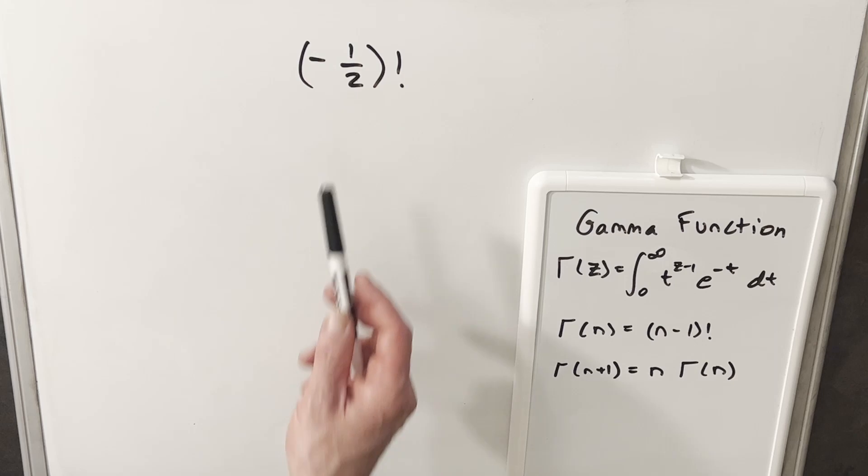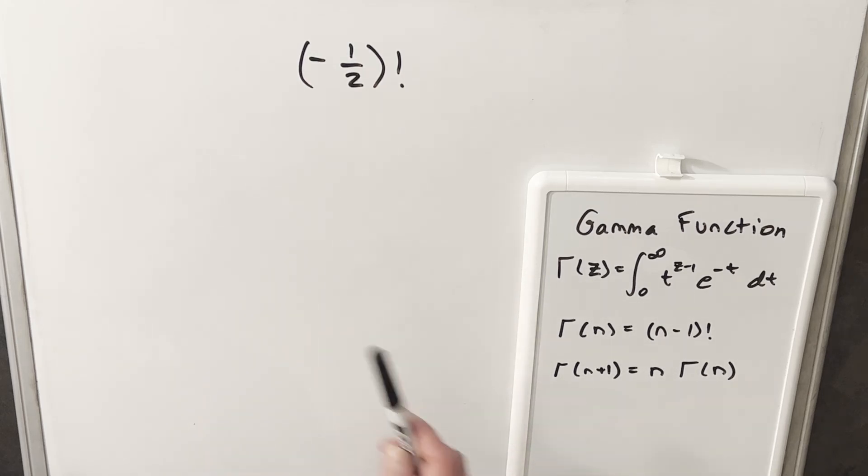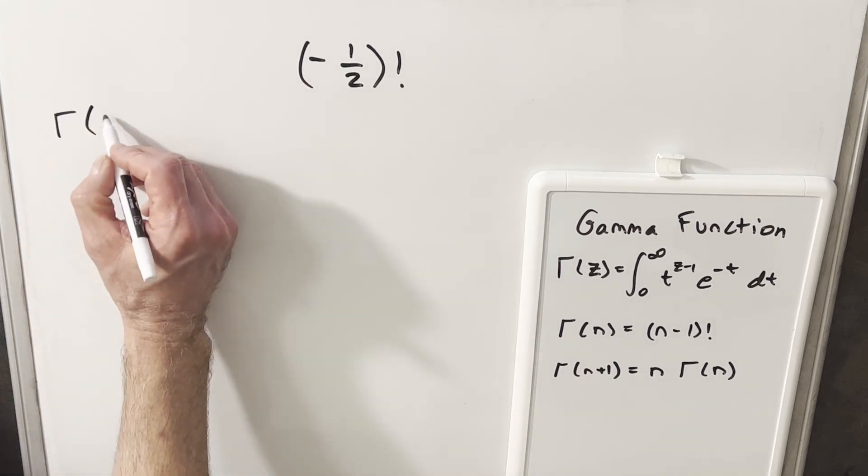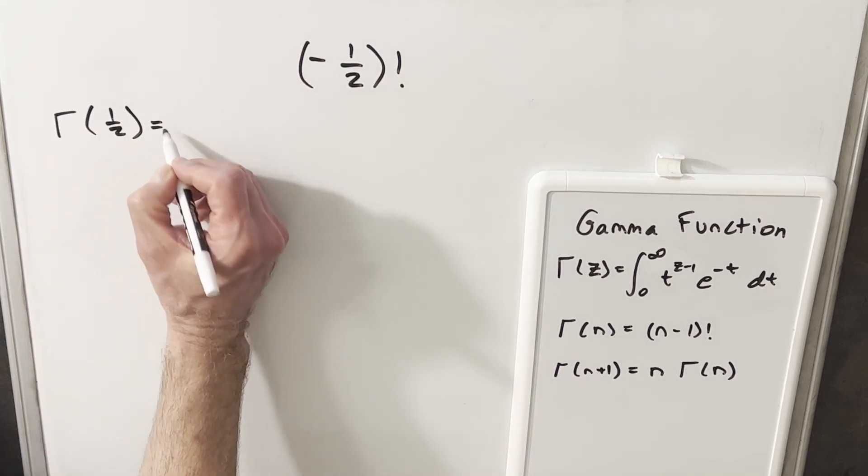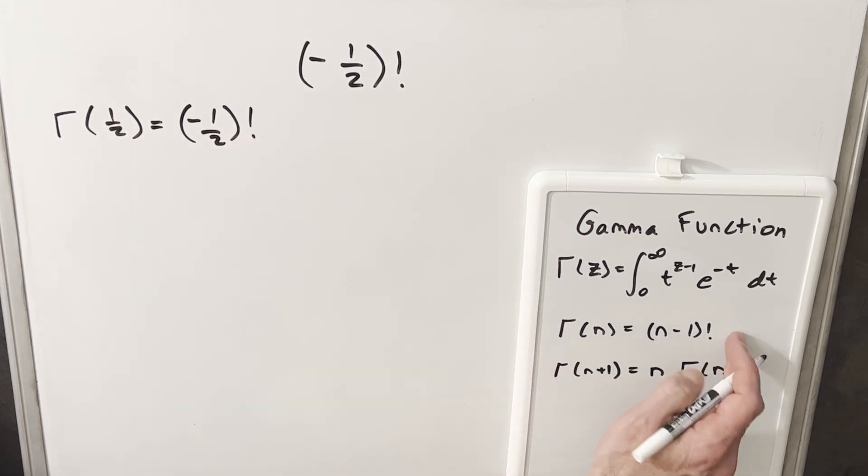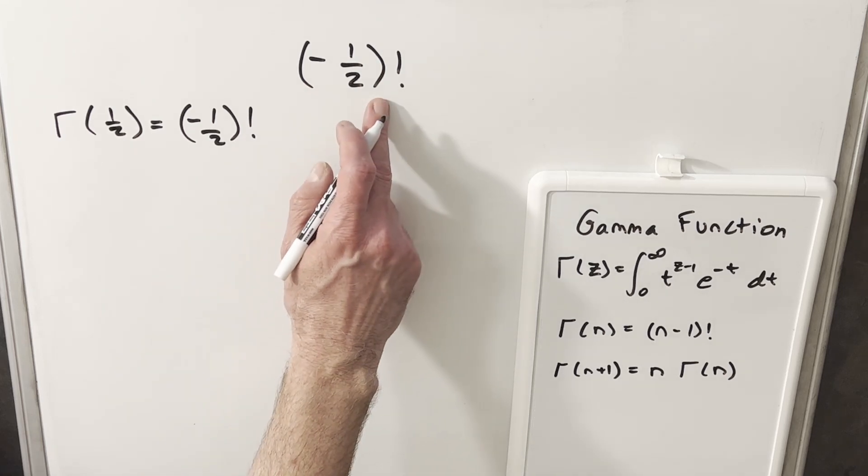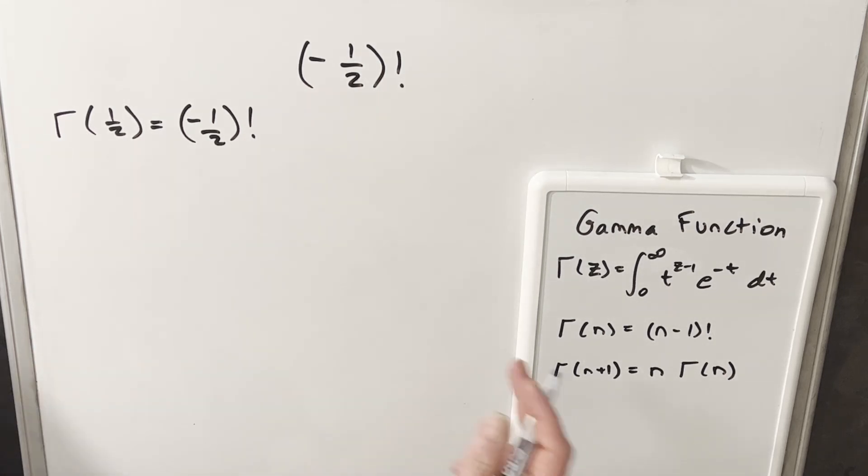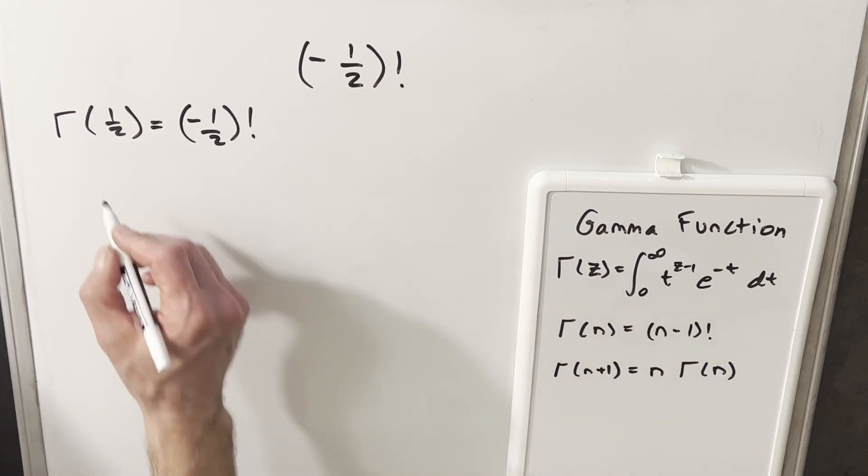So now what I want to do is look at specifically this minus one-half factorial case and how we can use the gamma function for this. So what we're going to do is use this second formula and just notice gamma of one-half. If we do half minus one, we get minus one-half factorial. So what we're looking for when we're looking for minus one-half factorial is just this gamma of one-half. And then for that, what we'll do is we'll use this first formula to put it in the form of an integral.